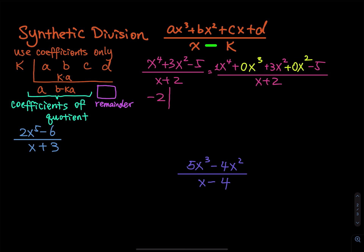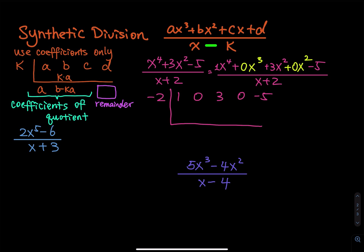We draw a big L. The dividend coefficients are: one, zero, three, zero, and negative five. Pull the one down. One times negative two equals negative two. Zero plus negative two equals negative two. Negative two times negative two equals positive four. Three plus four equals seven. Seven times negative two equals negative fourteen. Zero plus negative fourteen equals negative fourteen. Negative fourteen times negative two equals positive twenty-eight. Negative five plus twenty-eight equals twenty-three.